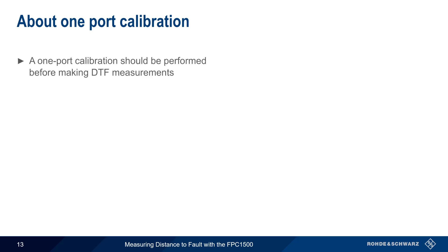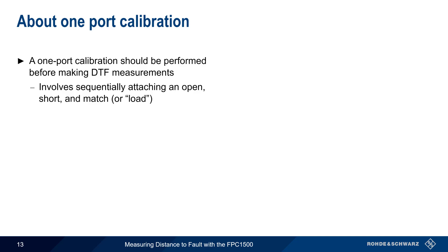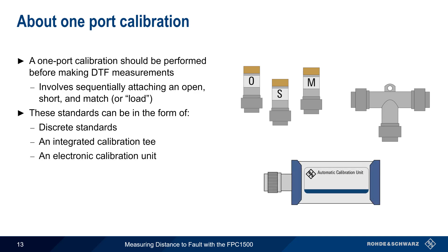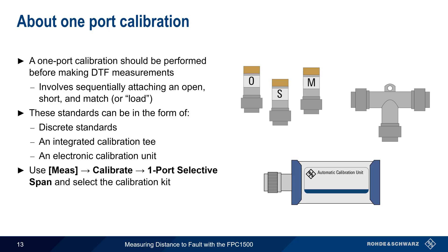After configuring parameters, the next step is to perform a one-port calibration. This process involves sequentially attaching an open, a short, and a match, or load, to the location where the cable under test will be connected. These standards can be in the form of discrete standards, or they may be combined into a calibration T. In addition to these manually attached standards, electronic calibration units can also be used — these units switch their internal standards in and out automatically and are controlled by the FPC. Regardless of which type of standards are used, the process is started by pressing the Measure hard key, pressing Calibrate, One-Port Selective Span, and selecting the calibration kit. Then simply follow the prompts to run the calibration process.